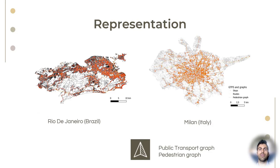This plugin has been tested on two different case studies: the city of Rio de Janeiro in Brazil and the city of Milan in Italy. Here you can see the consistency of the public transportation and pedestrian graph.